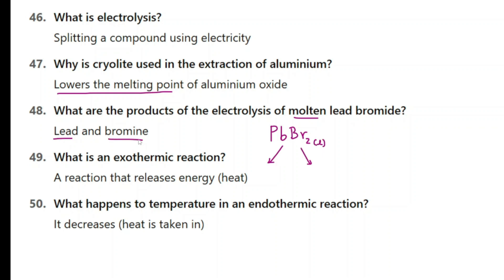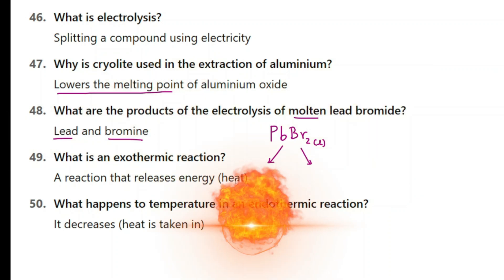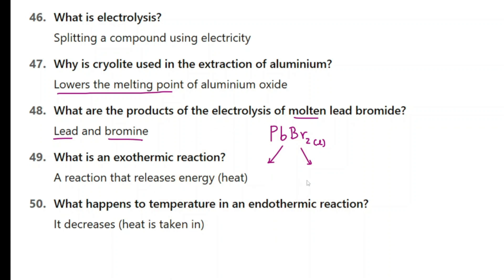What is an exothermic reaction? It is a reaction that releases energy — for example, combustion is an exothermic reaction. What happens to the temperature in an endothermic reaction? That is the opposite of an exothermic reaction — the temperature decreases as heat is taken in.